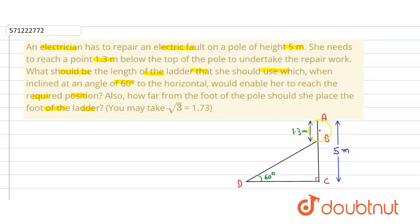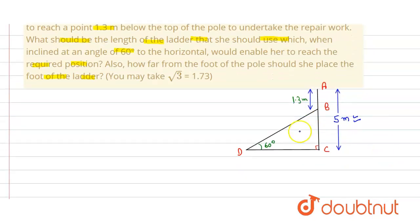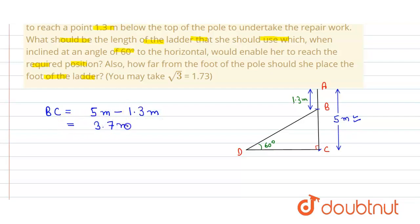Here, this one is the pole and the height of that pole is equal to 5 meters. The point is 1.3 meters from the top, so the distance from the foot of the pole — BC — will be equal to 5 meters minus 1.3 meters, which equals 3.7 meters. So BC = 3.7 meters.